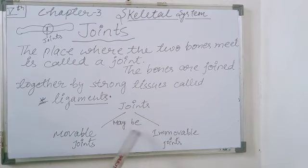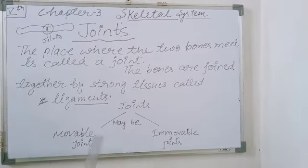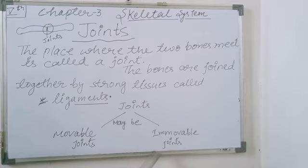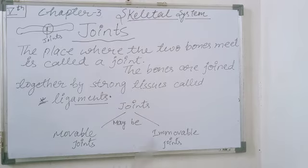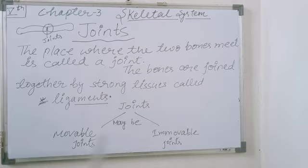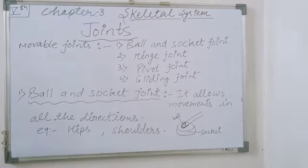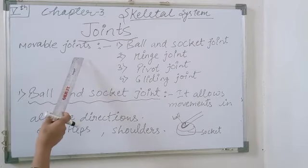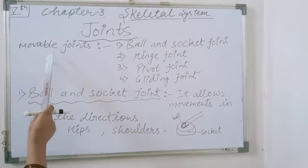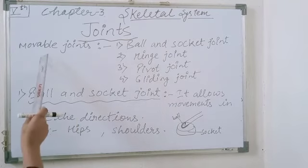Joints may be movable or immovable. Movable joints allow movement in any direction or in one direction. Immovable joints do not allow any type of movement. We will first discuss movable joints — there are several types of movable joints.